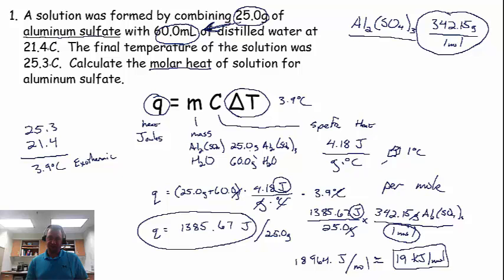And that is the final answer. So if I were to dissolve a mole of aluminum sulfate in water, I would produce 19 kilojoules of energy.